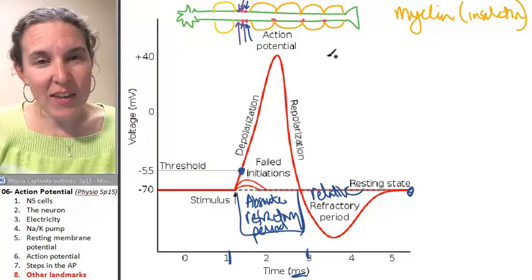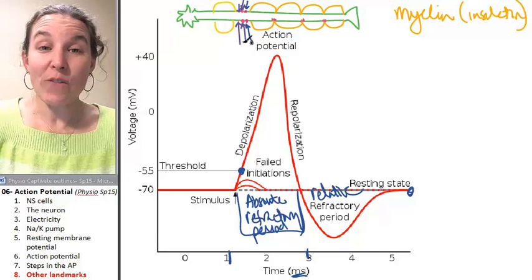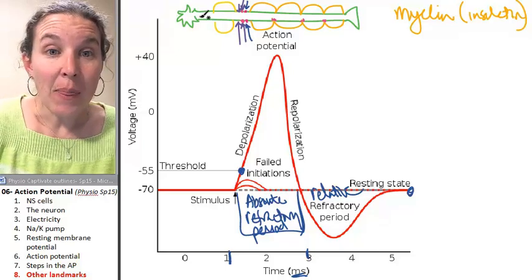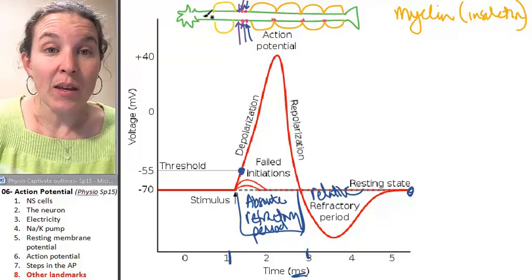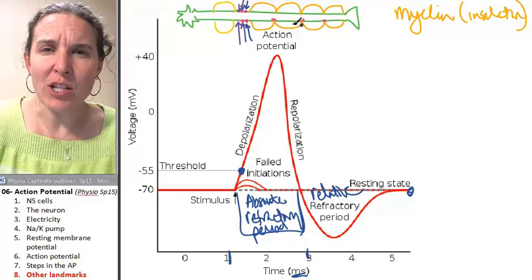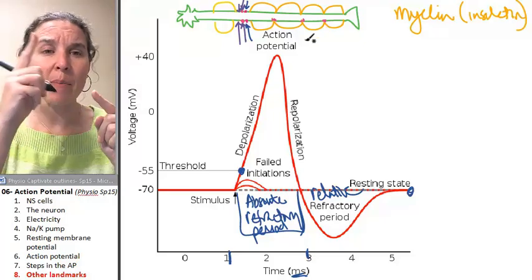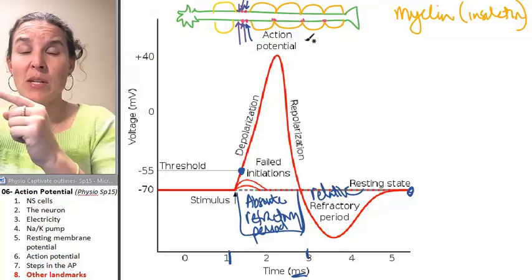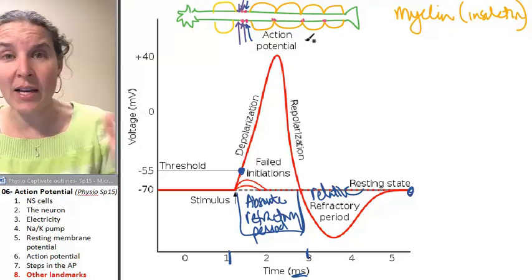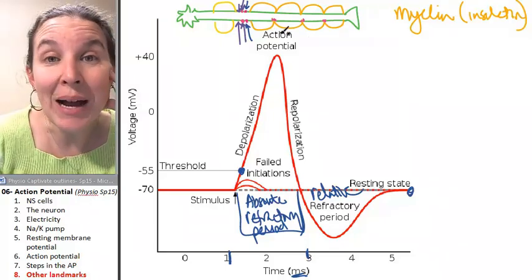And you can think of this as if you had an unmyelinated neuron that, basically, in order to propagate the action potential, you have to open up every single sodium and potassium channel all the way down the axon if you have a myelinated neuron.